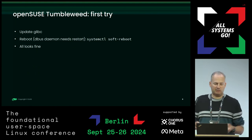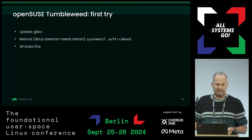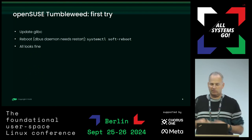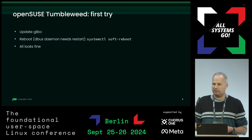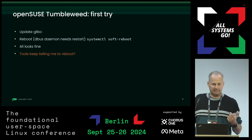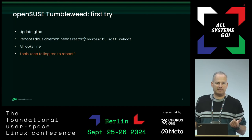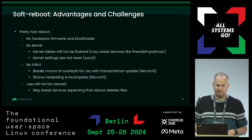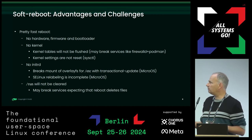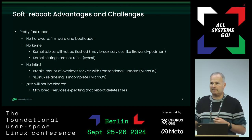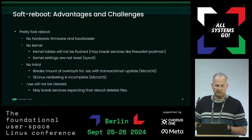My first try when I saw soft reboot was to open Tumbleweed, update dbus — which normally requires a reboot because you cannot restart the dbus daemon — so I tried systemctl soft-reboot. It was quick, everything looked good at the beginning. But the tools kept telling me I needed to reboot the system because of some challenges. Soft reboot is not going through a full reboot, so no new kernel and no initrd. The pretty fast reboot is that we don't boot the hardware firmware and bootloader — for most cases this doesn't really matter.